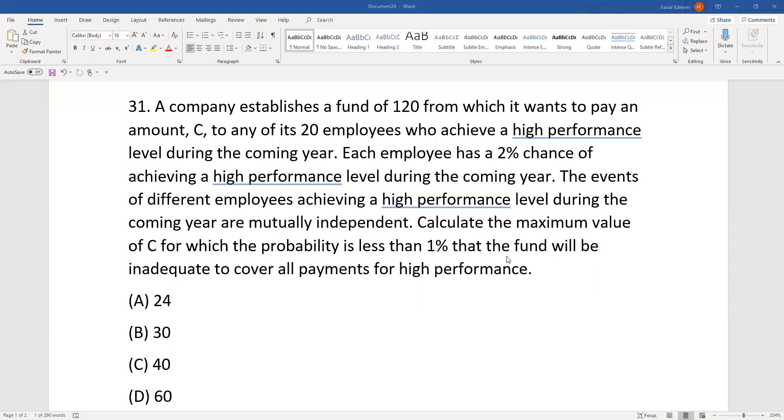A company establishes a fund of 120 from which it wants to pay an amount C to any of its 20 employees who achieve a high performance level. Each employee has a 2% chance of achieving high performance level. The events of different employees achieving a high performance level during the coming year are independent. Calculate the maximum value of C for which the probability is less than 1% that the fund will be inadequate to cover all payments for high performance.